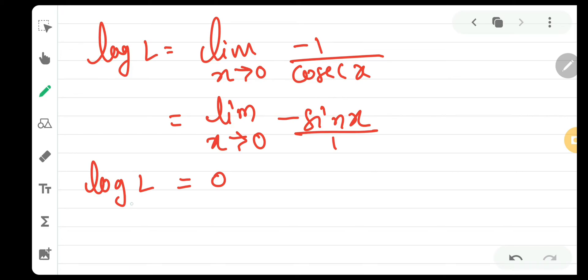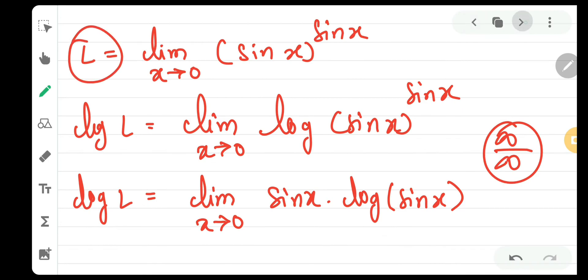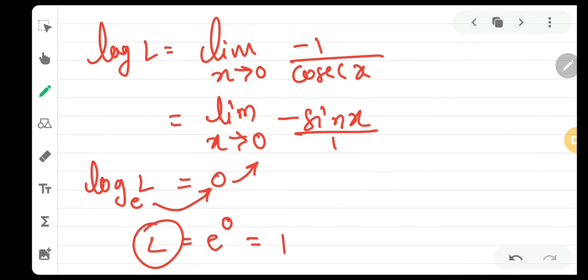And the base if you notice, it will be e. If the base is not written, it is e. Then you do udi udi jai. So, l is equal to e raised to 0 which is nothing but 1 because anything raised to 0 is 1. And that way we got the answer of l which we wanted, which is 1. Therefore, l is equal to limit x tends to 0 sin of x the whole raised to sin x is nothing but equal to 1.